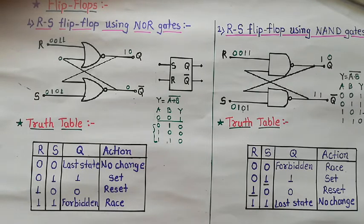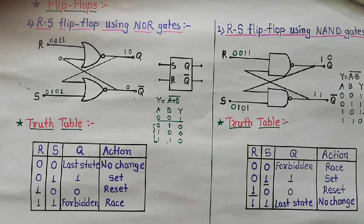The drawbacks of RS flip-flop are removed by using the D flip-flop. The next flip-flop is the D flip-flop, which has only one input — the D input.